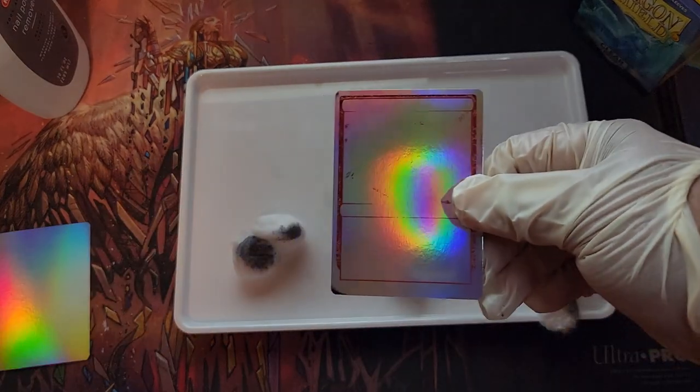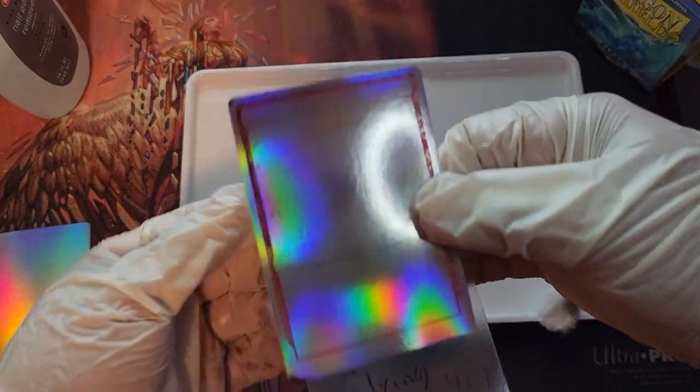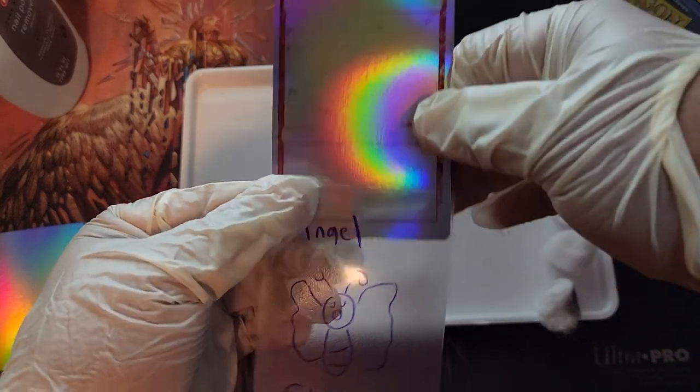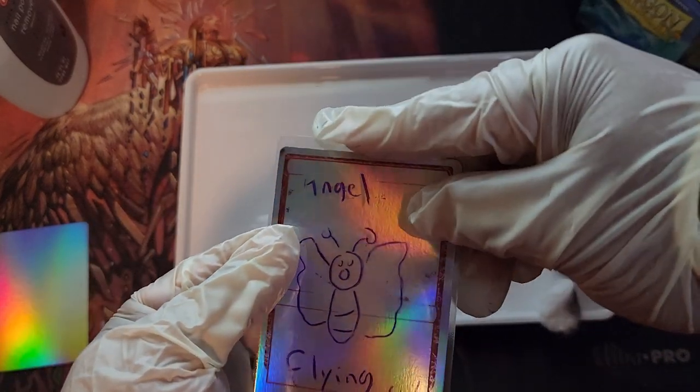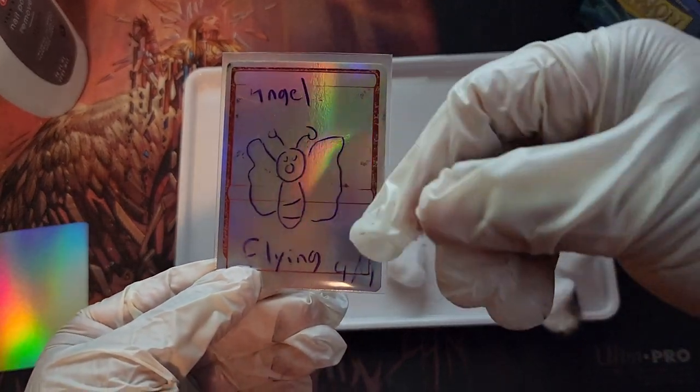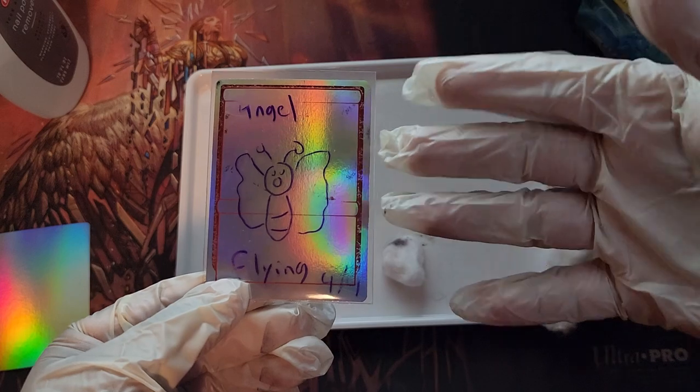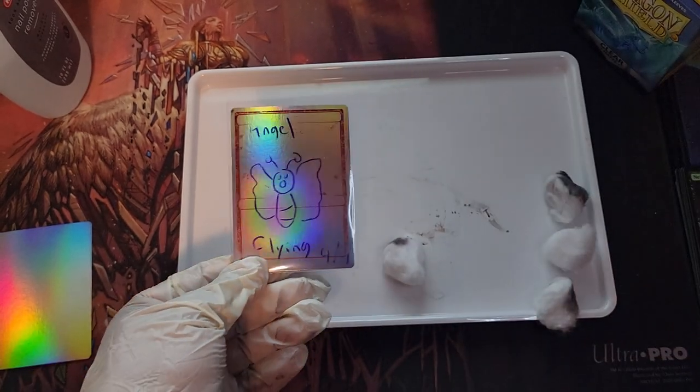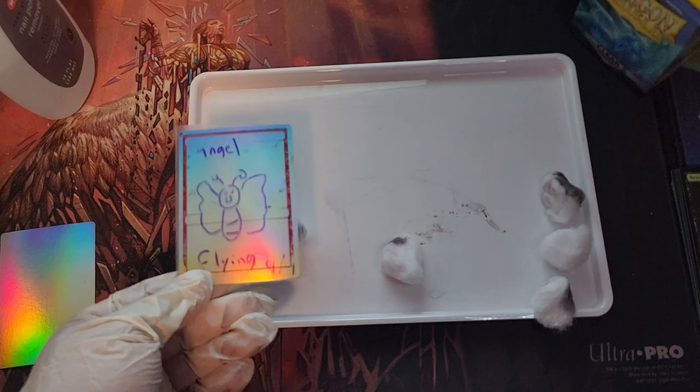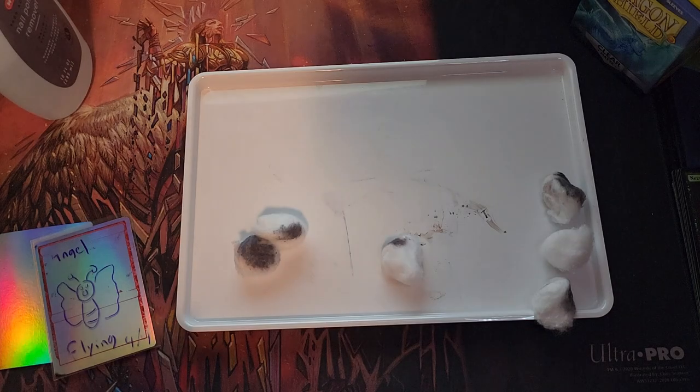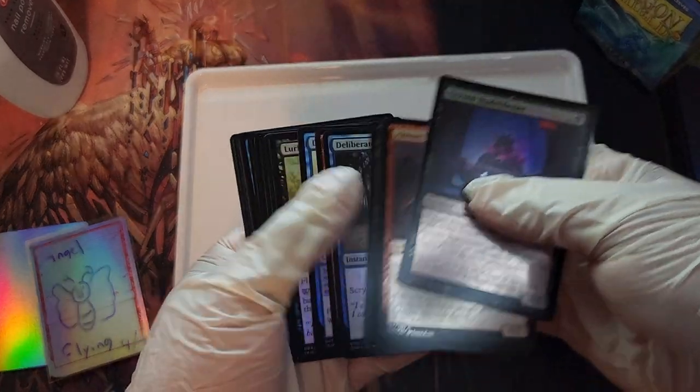And then you can take a sleeve, take a dry erase marker, and you can put your own artwork on it. And now I have my own angel token. So yeah, it kind of rubbed off. I have that acetone on my gloves, so I'm not surprised that that rubbed off. But you can use this as a token or you can proxy whatever card you want. But you can grab a whole stack just like I have here and rub out all the art.